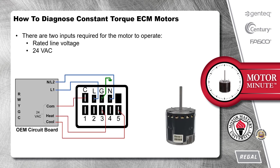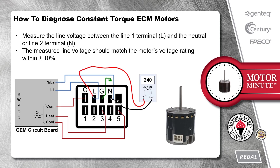There are two inputs required for the motor to operate: rated line voltage and 24-volt AC. Measure the line voltage between the line 1 terminal L and the neutral or line 2 terminal N. The measured line voltage should match the motor's voltage rating within plus or minus 10%.